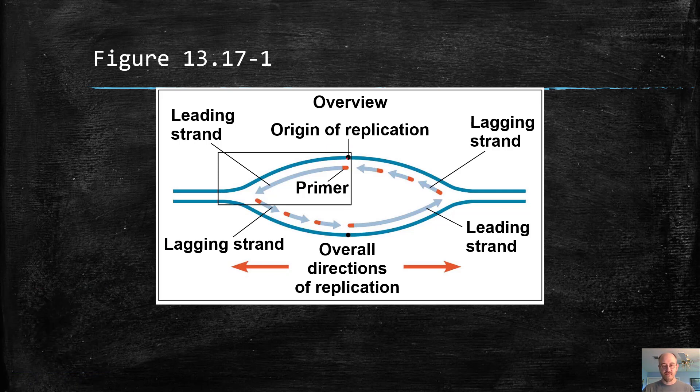Here's the leading strand. So let's just focus on the left replication fork here. Here's the origin of replication, and we're unzipping the DNA. Now, let's label the directionality of the parental strands first.